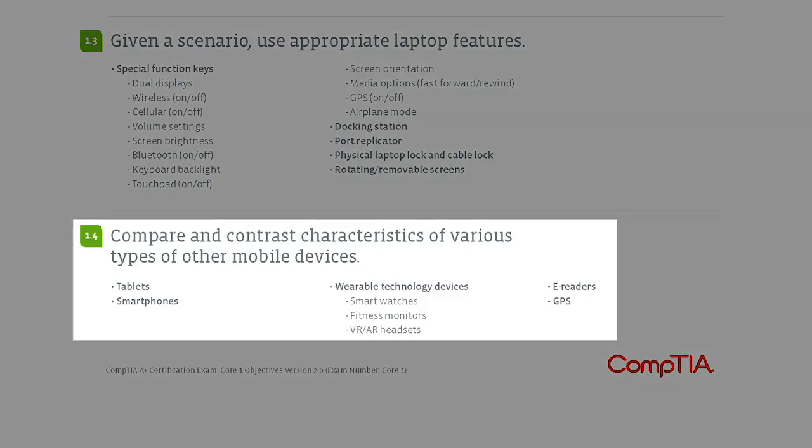Here at 1.4, it says compare and contrast characteristics of various types of other mobile devices — so smartwatches, virtual reality headsets, and e-readers. A question like this isn't really expecting you to know how to configure or set up something; it's going to make sure you understand what a smartwatch is capable of doing and what we expect an e-reader to do.